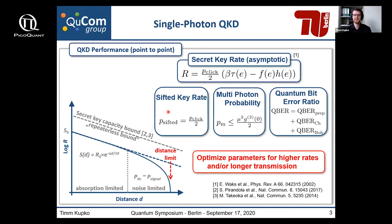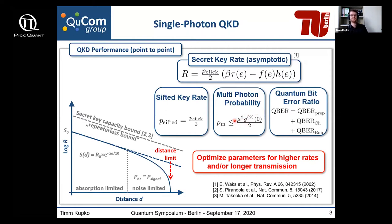Where the sifted key rate and the quantum bit error ratio are quite similar, we have another fraction which deals with the multi-photon emission probability, which could be exploited in a photon number splitting attack. To estimate this number in practical single photon based QKD systems, we use the equation from Buxet I, which gives an upper bound of the multi-photon emission probability if we have knowledge about our g²(0) value and the mean photon number in the quantum channel.